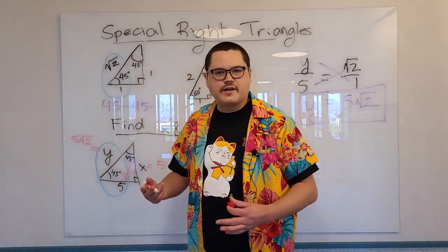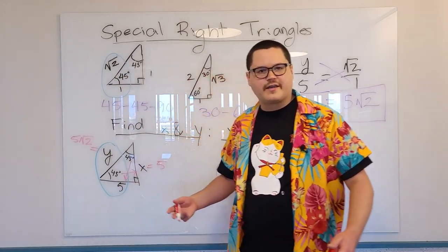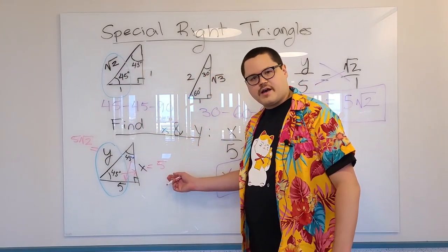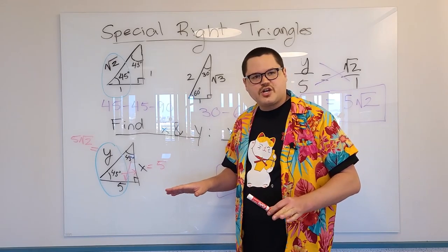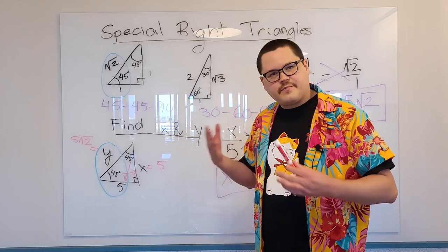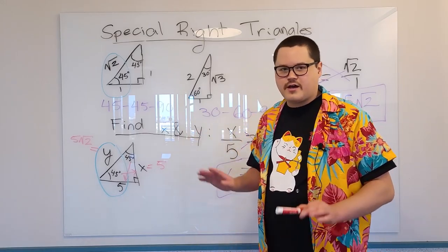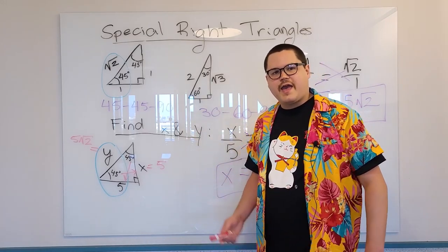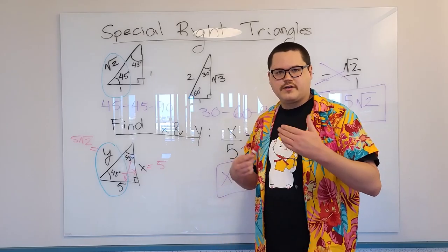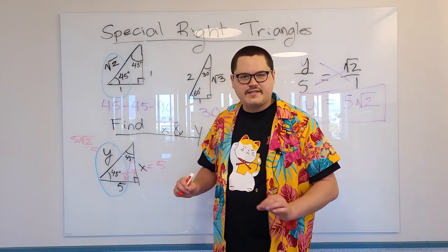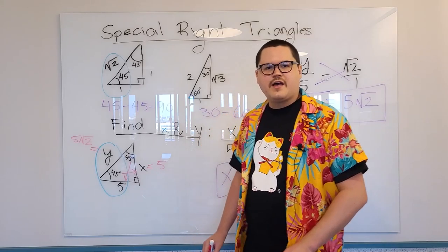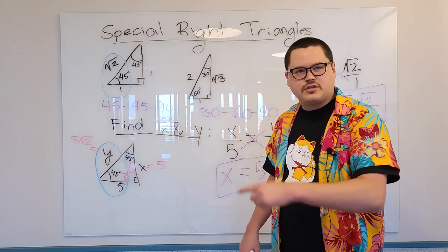If you don't believe me, plug in 5 times square root of 2 in your calculator. Okay. What's the other thing we can check? The other thing we can check is called the Pythagorean theorem. I think you already know it. A squared plus B squared equals C squared, where A, B, and C are the sides of a right triangle, and C is the hypotenuse, the long side.